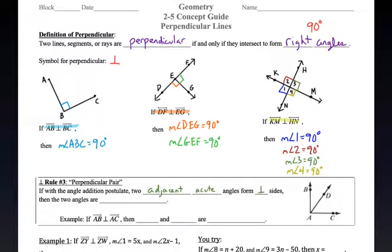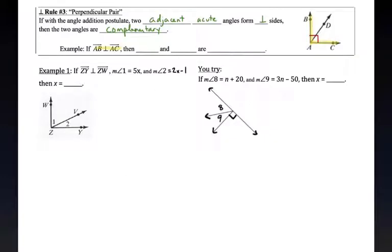So one way that this pops up here. If, with the angle addition postulate, two adjacent acute angles form perpendicular sides, then the two angles are complementary. So look at our example here. If AB is perpendicular to AC, that means then that angle BAC is a right angle. So that also means that the two angles that make up the big angle, the part plus the part equal the whole, because they add up to equal 90, then they're complementary.